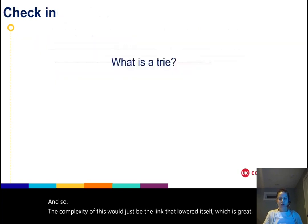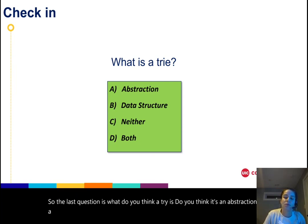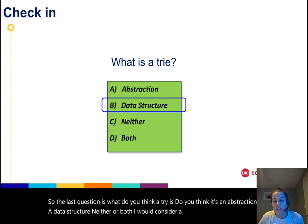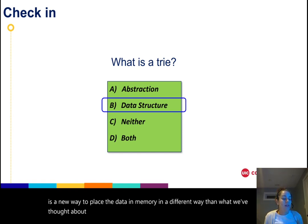So the last question is: what do you think a trie is? Do you think it's an abstraction, a data structure, neither, or both? Well, I would consider a trie a data structure in itself. It is a new way to place the data in memory in a different way than what we've thought about previously.